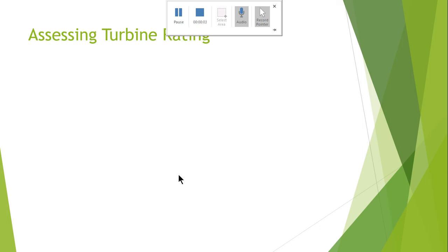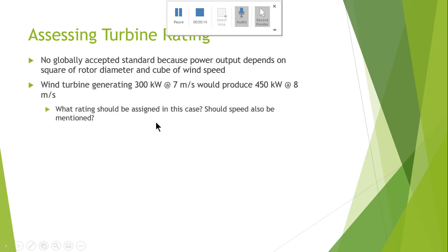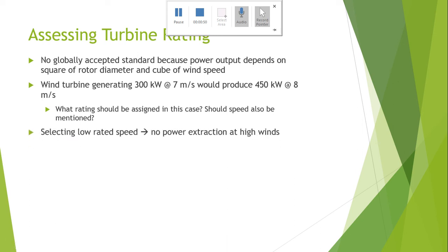This is a continuation of lecture number 24. In this part, I will be discussing the assessment of turbine rating. In practical scenarios, there is no globally accepted standard because the power output depends on the square of the rotor diameter and the cube of the wind speed. A wind turbine generating 300 kilowatts at 7 meters per second might produce 450 kilowatts at 8 meters per second wind speed, and no globally accepted standard has been developed for such scenarios.